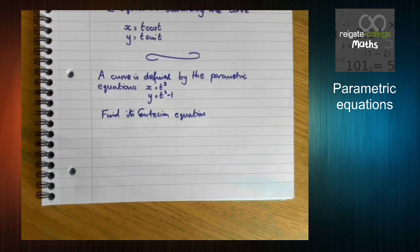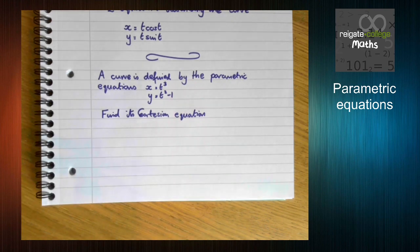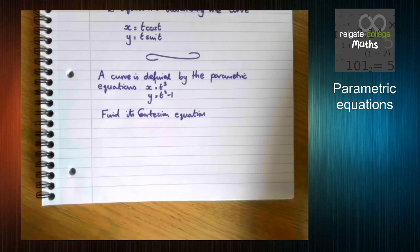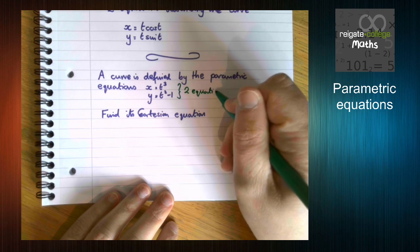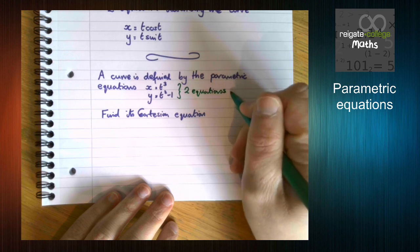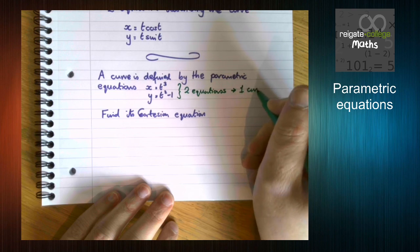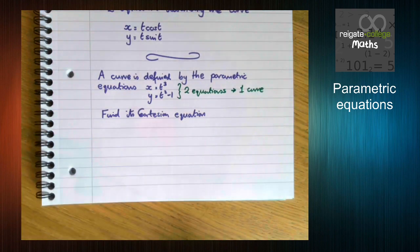So we may well have an example like this. A curve is defined by the parametric equations x equals t cubed and y equals t squared minus 1, find its Cartesian equation. Again, notice we have two equations for one curve. And that's really the first thing you've got to get your head around with parametrics is that concept.